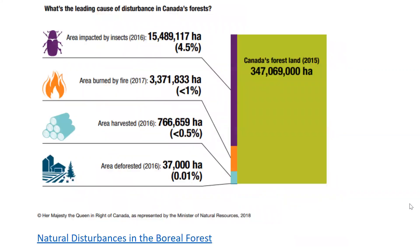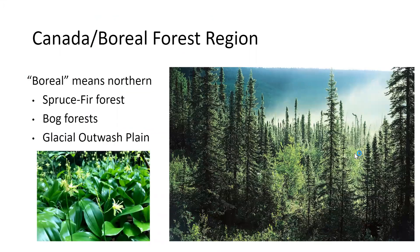Looking at disturbance — some of these should be familiar. Large areas are impacted by insects and fire. Compared to forests that are harvested, much more forest is impacted by insects, burning, and deforestation. Insects are a big issue. In the Canada boreal forest region — and boreal means northern — we have three different types of forests we'll talk about in this lecture.